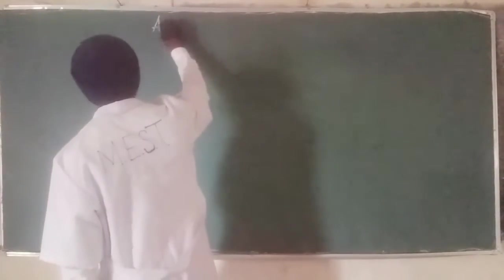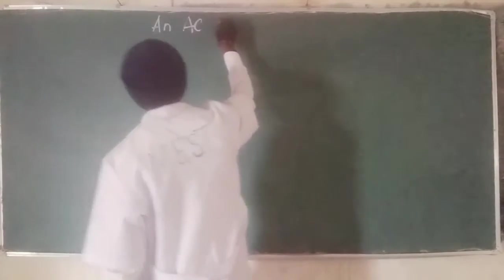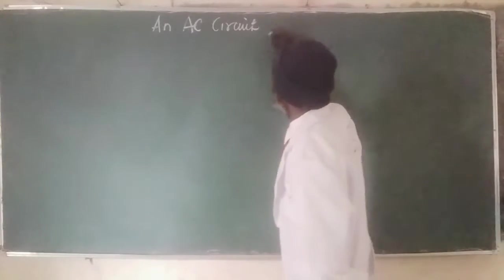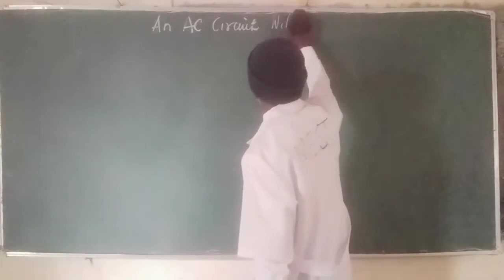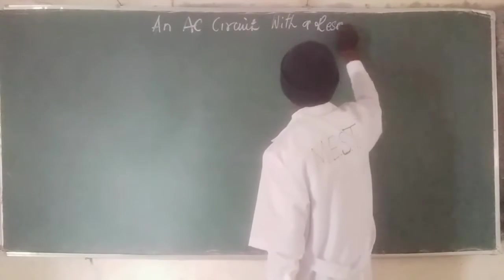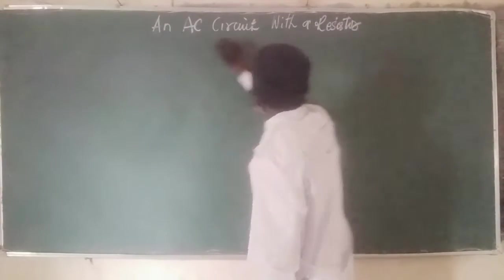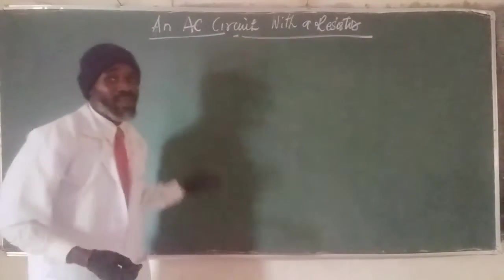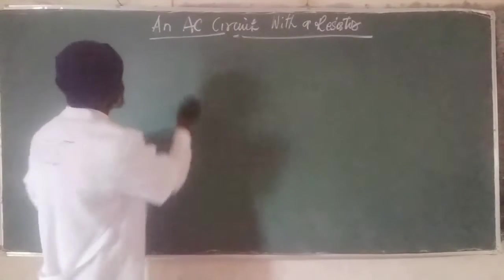An AC circuit with a resistor. That's what I'm going to learn today, an AC circuit with a resistor. Let's look at that diagram. We're going to do it now.